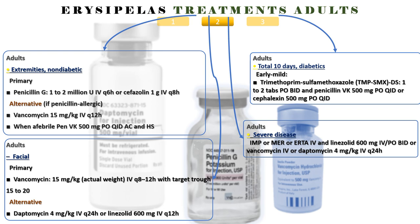Facial form. Primary: vancomycin 15 mg/kg actual weight IV every 12 hours with target trough 15 to 20. Alternative: daptomycin 4 mg/kg IV every 24 hours, or linezolid 600 mg IV every 12 hours. Severe disease form: IMP, MIR, or ERTA IV and linezolid 600 mg IV/PO twice a day, or vancomycin IV, or daptomycin 4 mg/kg IV every 24 hours.